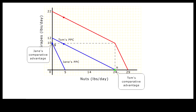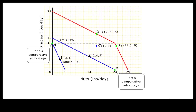Let's move down the combined PPC from the vertical intercept and observe where the producers are on their respective production functions. If Tom is at point C' and Jane is at point E', and each is producing for his or her own consumption, their combined output X' is below their combined PPC. Both X1 and X2 are feasible and better than X' if at least one of them specializes.